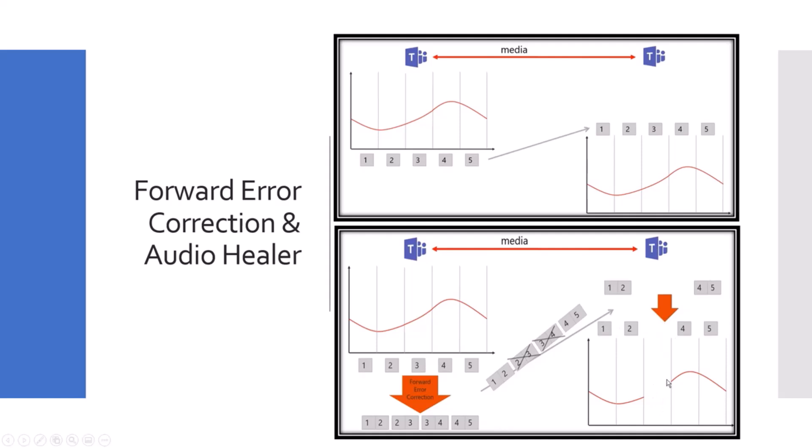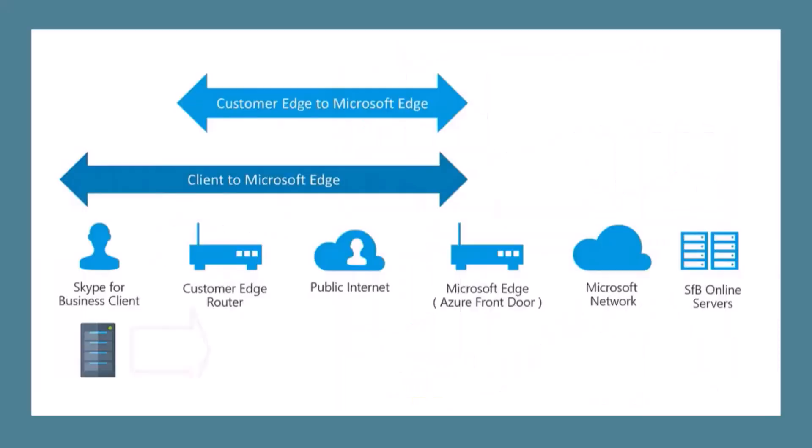In a scenario where two packets are lost completely — say we only have packets one, two, four, and five — the Teams audio healer will try to bridge the gap and fix it. Sometimes it can, sometimes it can't. It will try to guess the lost packets using mechanisms possibly including AI. If it can recover, great. If we lose more than roughly two packets, the network may not be suitable, and you may hear that robotic voice or have unrecoverable audio.